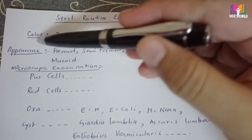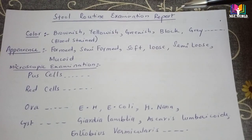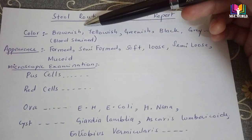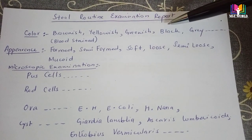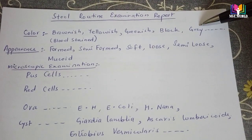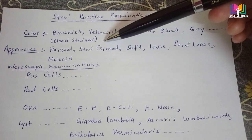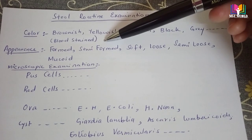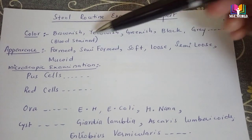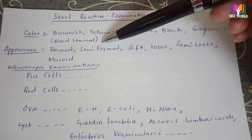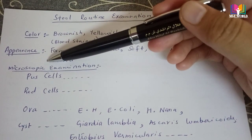First of all, we start from the color. You have to write what is the color of the stool. Normally it will be brownish. If loose or mucoid, it will be yellowish or greenish. Sometimes if there is more blood, it will be black, or sometimes gray. If you see only blood, you write 'blood stain'. If brownish with some blood, you write 'brownish with blood stain', or 'yellowish with blood stain', whatever the color may be.